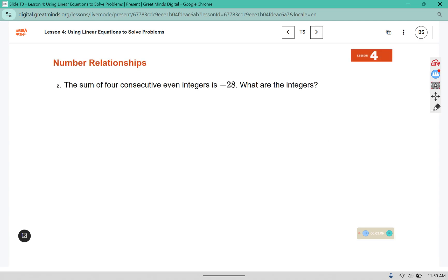The sum of four consecutive even integers is negative 28. So even integers would be like 4, 6, 8, 10. Those are even. There's four of them. And so this time, if this is our first number x, we needed to increase it by 2. To get to 4 to 8, we would need to increase by 4. And to get from 4 to 10, we would need to increase it by 6.